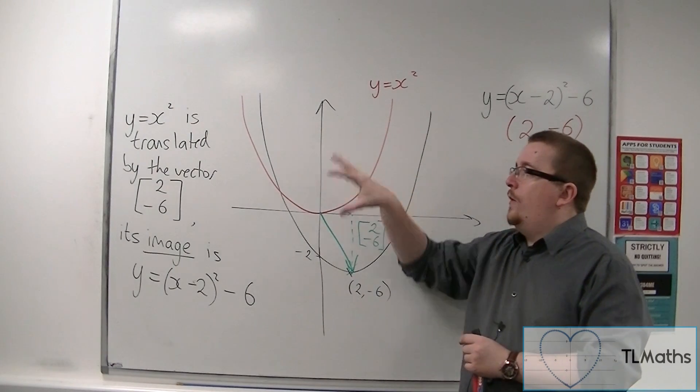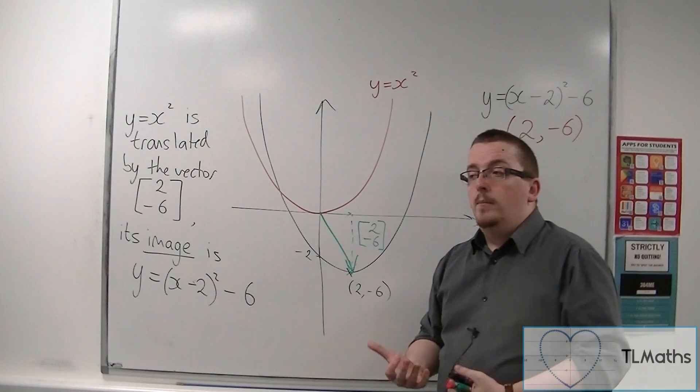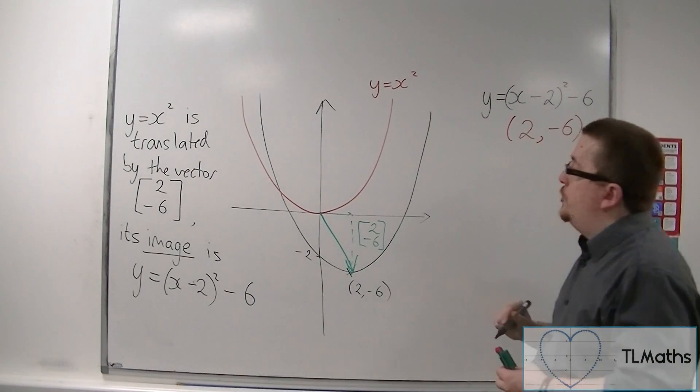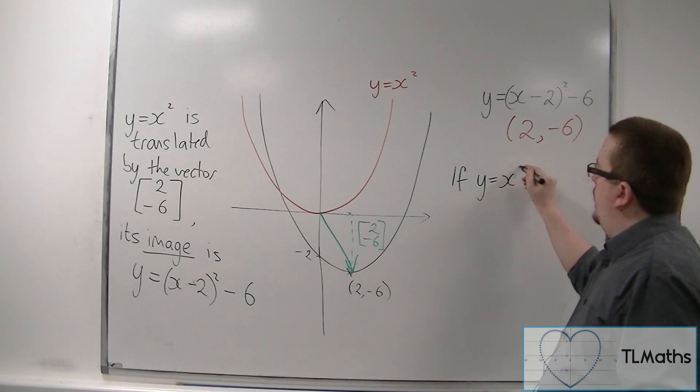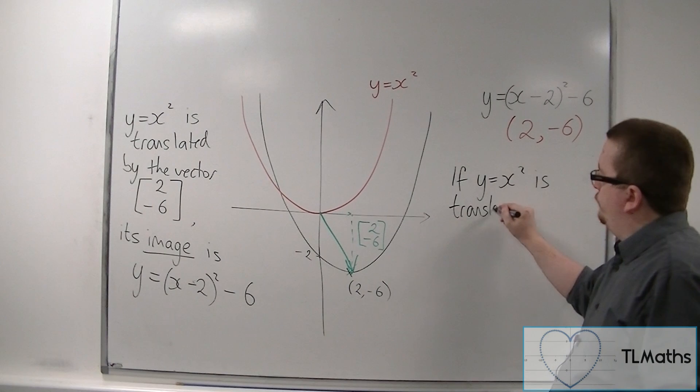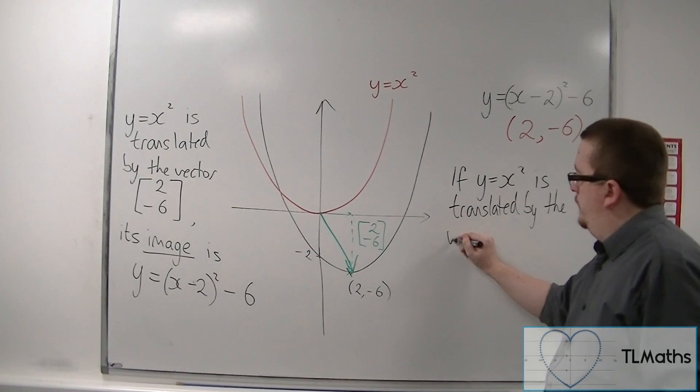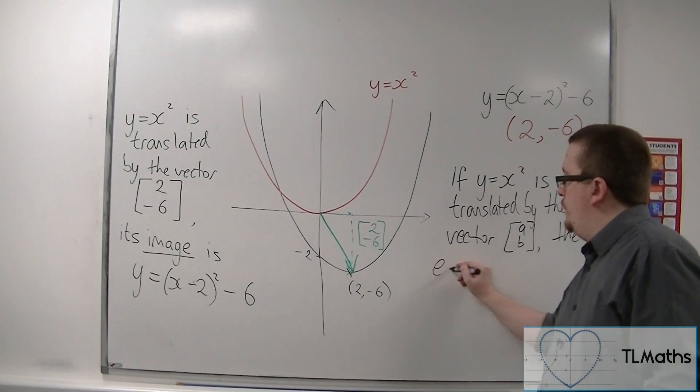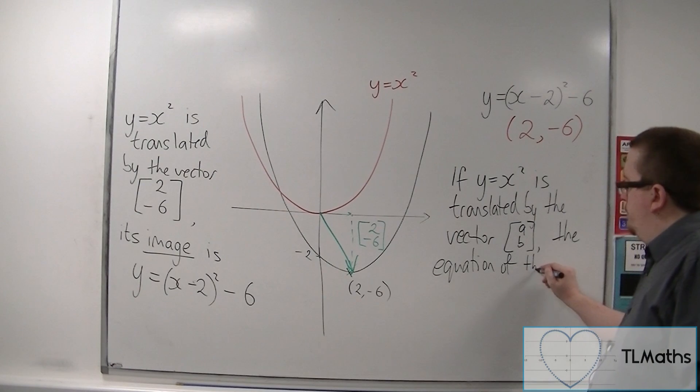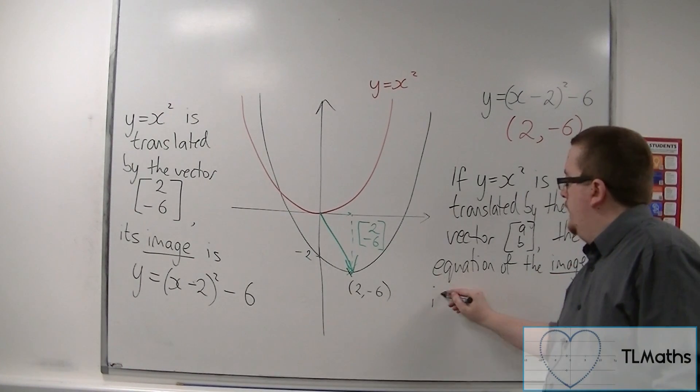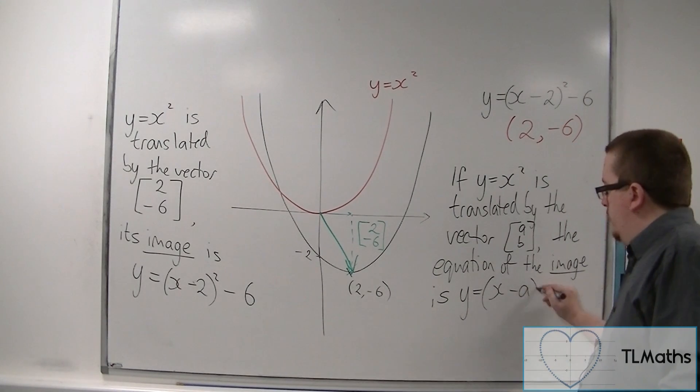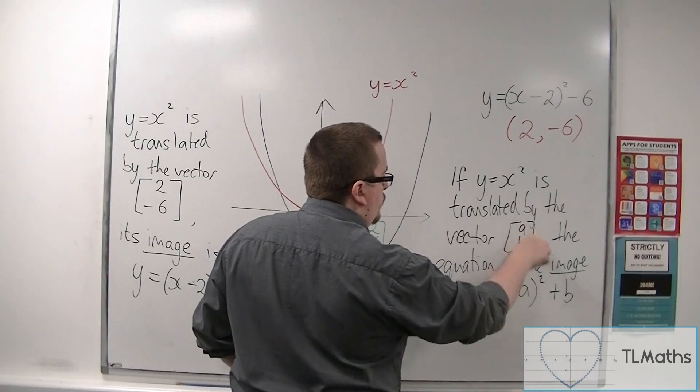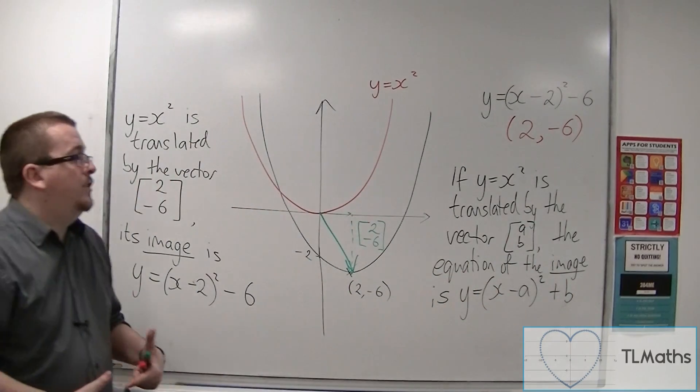So effectively we are now able to translate y equals x squared by any vector we like. So to take it in an even more general direction, if y equals x squared is translated by the vector a, b, the equation of the image is y equals x minus a squared plus b. So as you can see the a changes sign, the b stays the same. Much in the same way as we could write down the coordinates of the vertex.